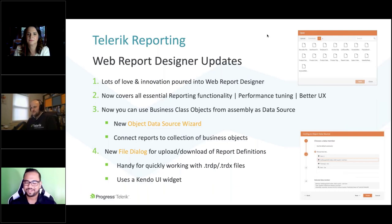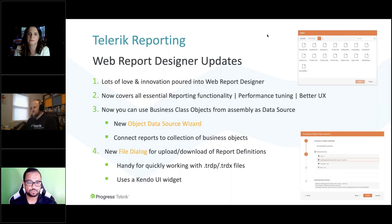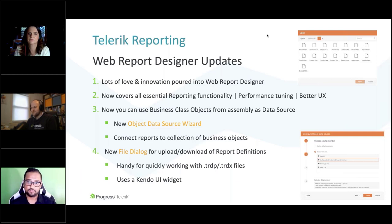This release includes a brand new Object Data Source wizard so you can pull report data from other business objects and assemblies. There is also a new file dialog so you can quickly upload or download a report definition file and save it to your back-end services. Some of this is actually built with Kendo UI, which is exciting.